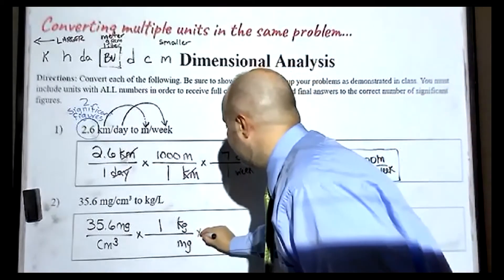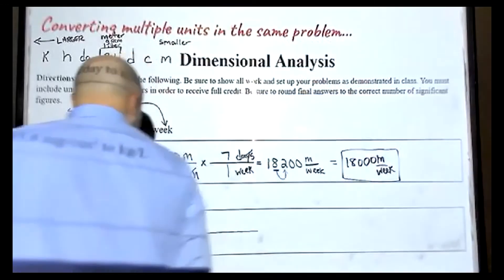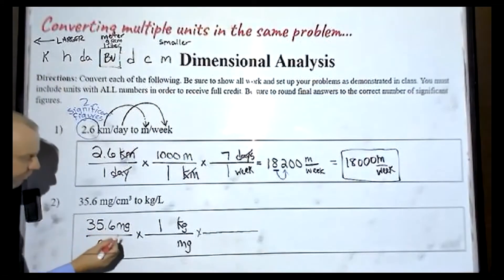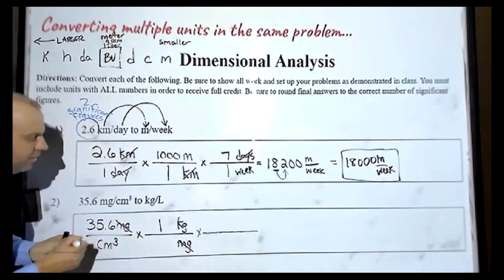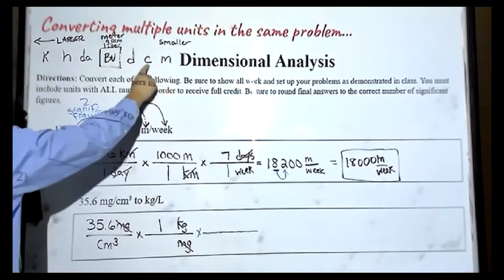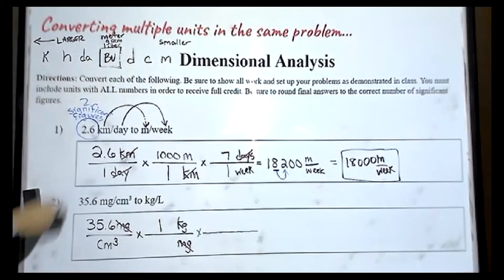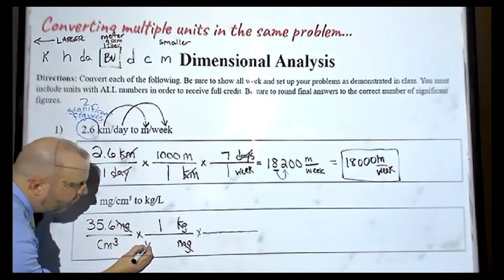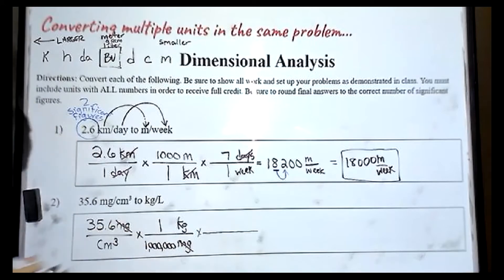Let's take a look at the next step. Milligrams to kilograms — I move one, two, three, four, five, six spaces. So I need a one with one, two, three, four, five, six zeros. There are one million milligrams in one kilogram. For my next part, I'm going to convert centimeters cubed, which is on the bottom, into liters. So I need to put centimeters cubed on top.